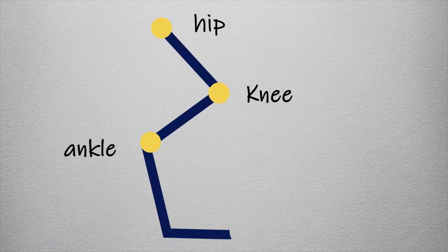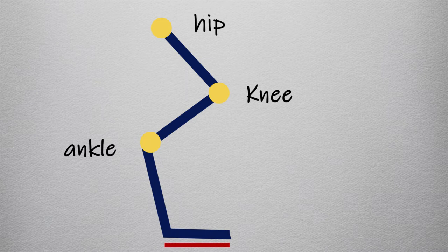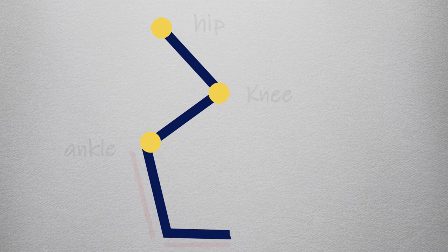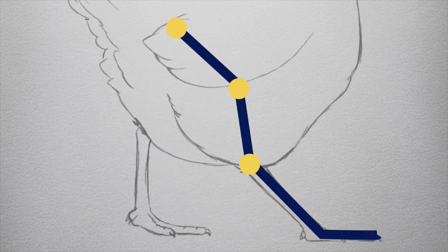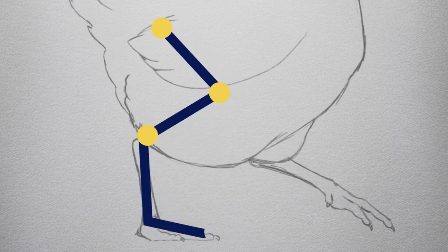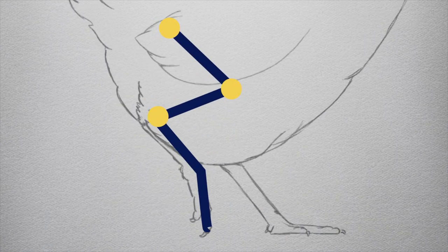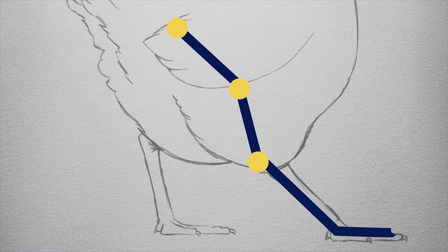But chicken anatomy is very different. They stand on their toes, and the bones in the foot are fused into one long tarsometatarsus connecting to the ankle. Therefore, each step consists of two separate movements. First, they fold their legs almost completely, and then they extend them to the next point.